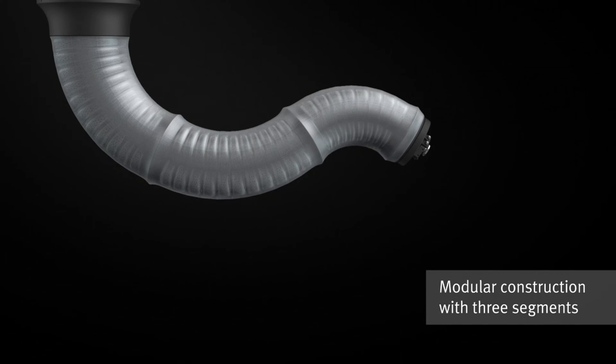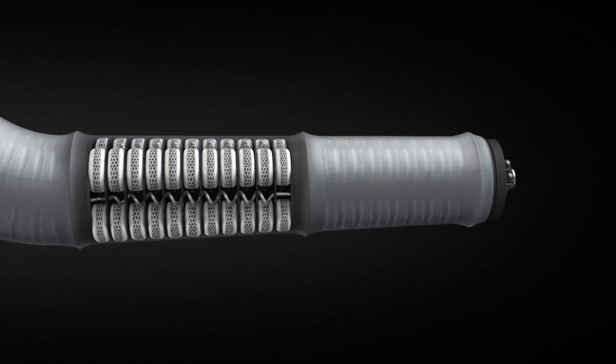The arm of the Bionic Motion Robot consists of three flexible basic segments, each of which is moved by four pneumatic bellows.